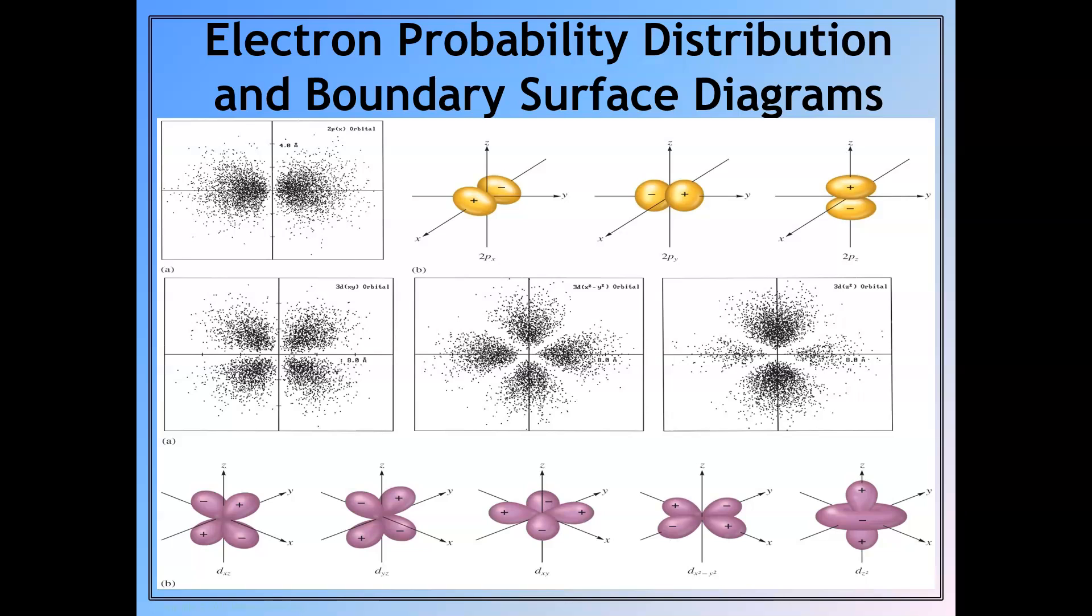Here is, again, some electron probability distribution. So, again, instead of pinpointing exactly where an electron is, we use what we say a probability distribution or a boundary surface diagram. So where you see those darkened kind of black dots, that's where most likely the electron is going to be. We don't know for sure, but we're predicting that.